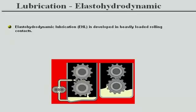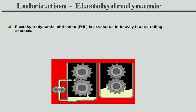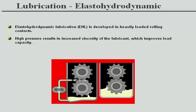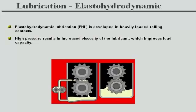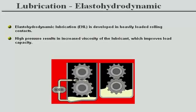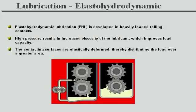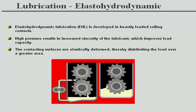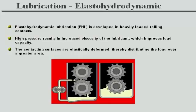EHL is a special form of hydrodynamic lubrication developed for heavily loaded rolling contacts, such as roller bearings and some gears. Lubricant is squeezed into the contact area and subjected to extremely high pressure. The very high pressure results in tremendously increased viscosity of the lubricant and thereby significantly improved load carrying capacity. The contacting surfaces are elastically deformed, thereby distributing the load over a far greater area.